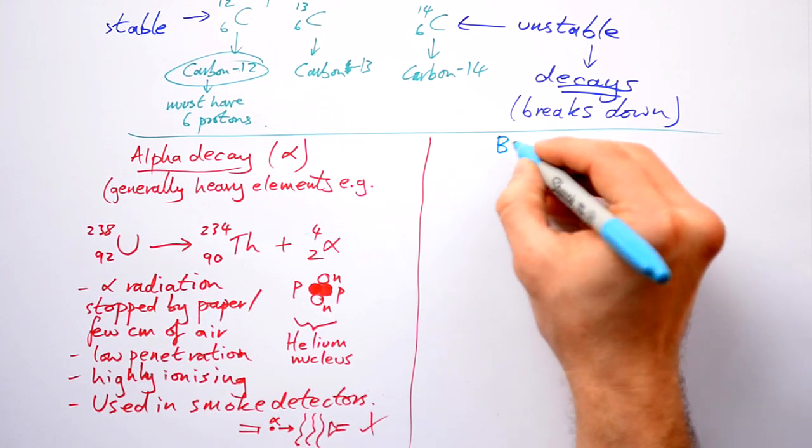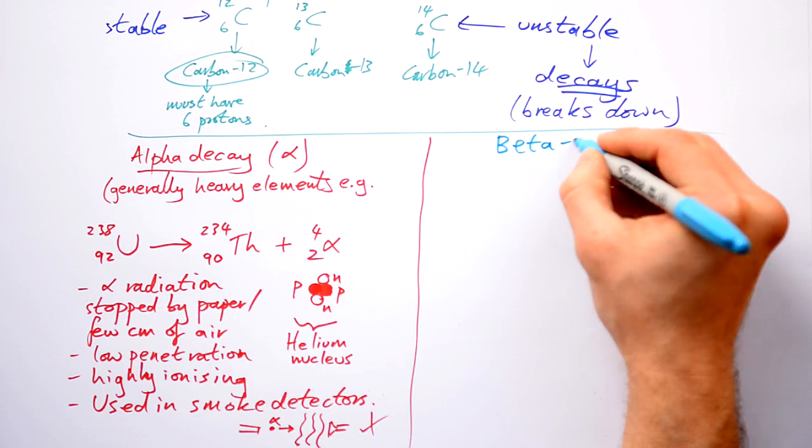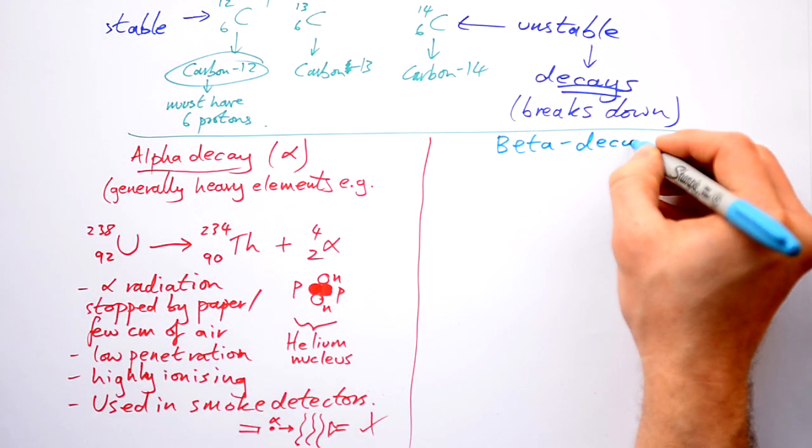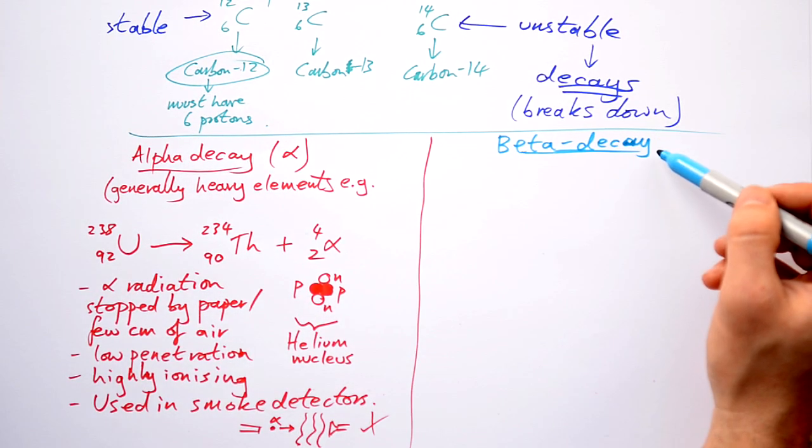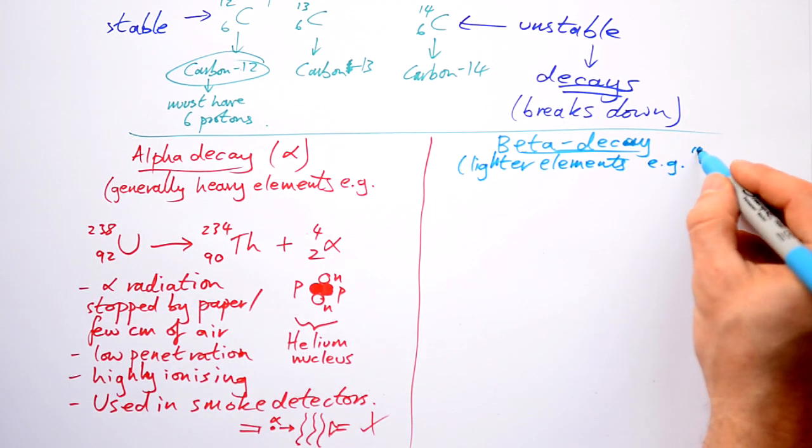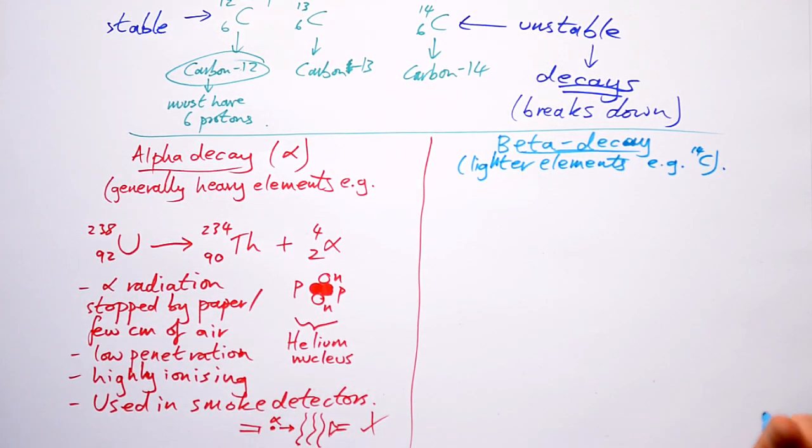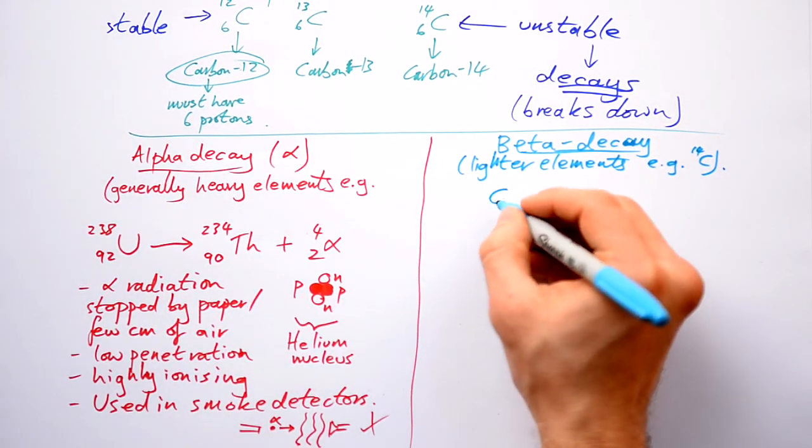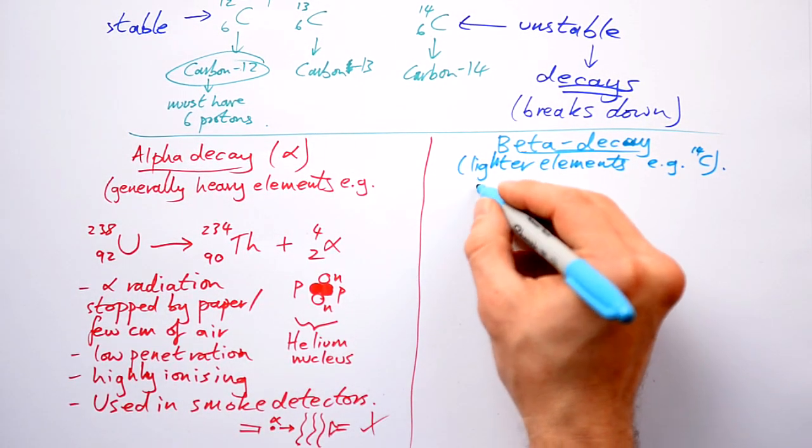Beta decay is the other type of decay when a nucleus breaks down. And this is what happens with lighter nuclei, like carbon-14. So, let's get our carbon-14. We know it's carbon, so it's got to have six protons.